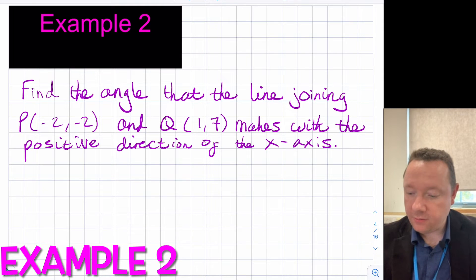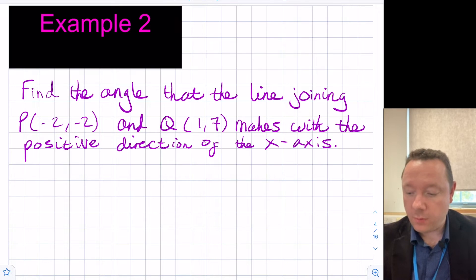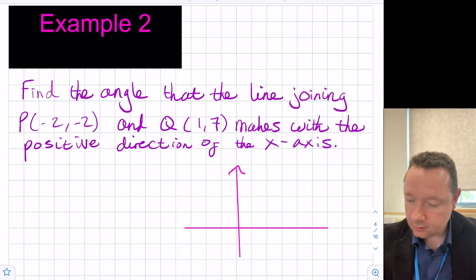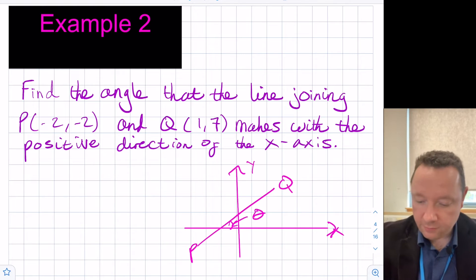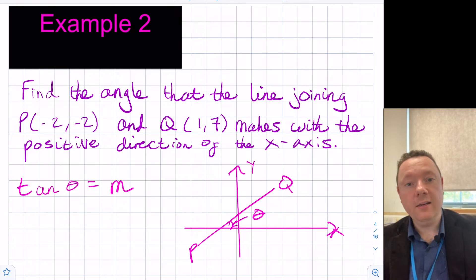Example two says find the angle that the line P(-2, -2) and Q(1, 7) makes with the positive direction of the x-axis. If we draw ourselves a little picture, there's an x and y-axis, and we've got some line with two coordinates, P and Q, and it's asking us what is this angle in here. Let's call that theta. So we're doing tan theta equals the gradient. So if we can find the gradient, we can work backwards to find the angle by using the inverse tan.